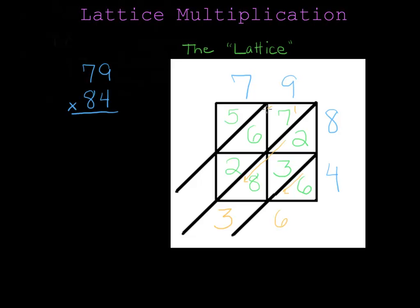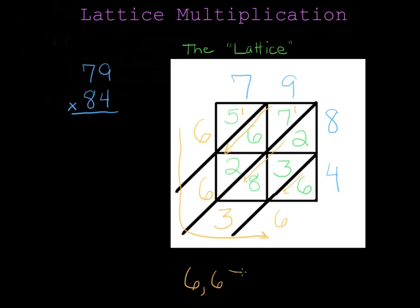I'm going to now add down the diagonal. One plus seven is eight, and eight plus two is ten. And now I can add on my six for sixteen. Again, sixteen won't fit in this space, so I leave the six here and carry a one into my next diagonal. In my last diagonal, I have one plus five, which is six. I read my answer around the corner: my answer will be 6,636.